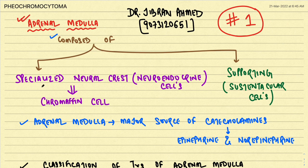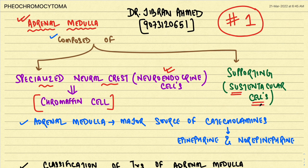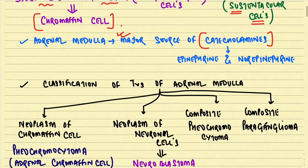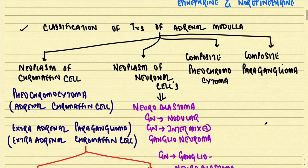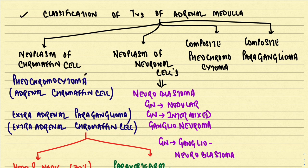The adrenal medulla is composed of two types of cells: one is specialized neural crest cells, also called neuroendocrine cells or chromaffin cells, and the other type is a supporting cell called the sustentacular cell. The adrenal medulla is a major source of catecholamines, especially epinephrine and norepinephrine.